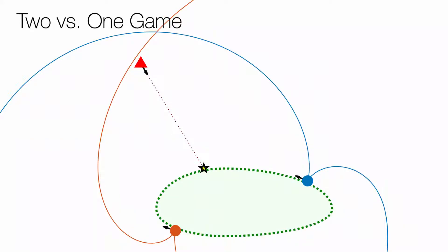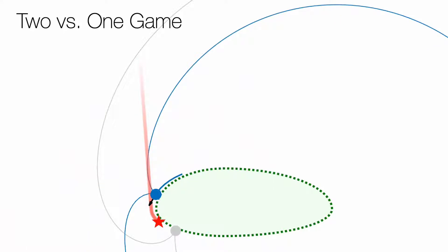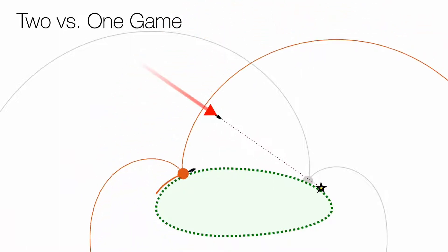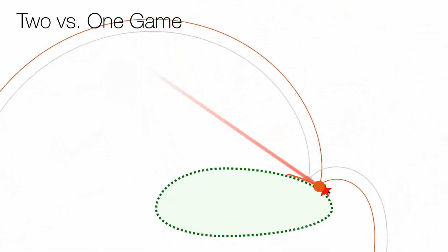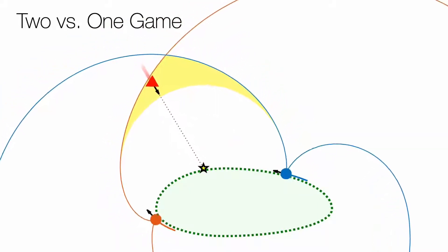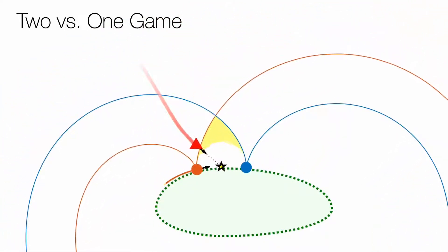However, the defenders can actually do better. For example, neither of the defenders can capture the intruder in this configuration. But if the defenders team up and use a pincer movement, they can guarantee capture.